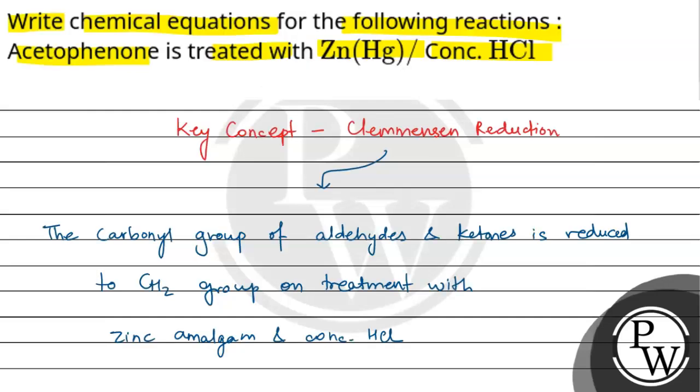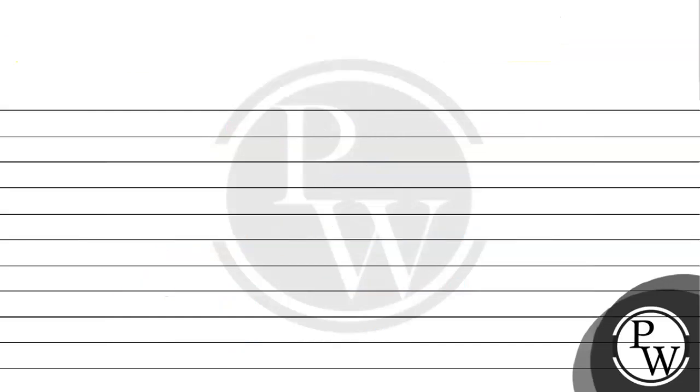So Clemmensen reaction question is given. Acetophenone is treated with Zn-Hg. So Acetophenone is a benzene ring along with CO-CH3.